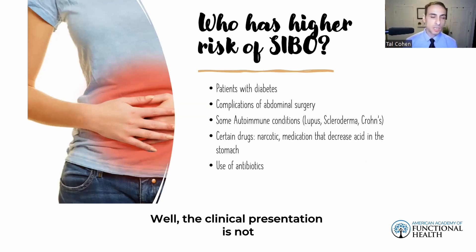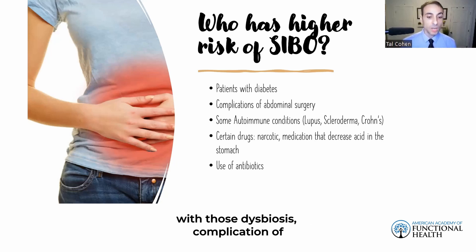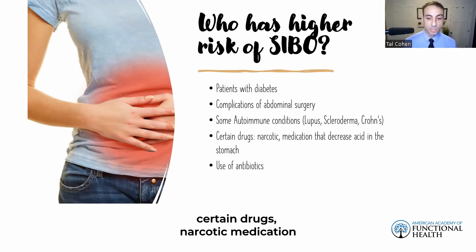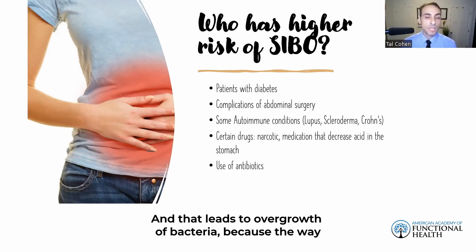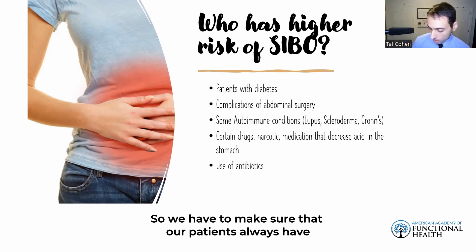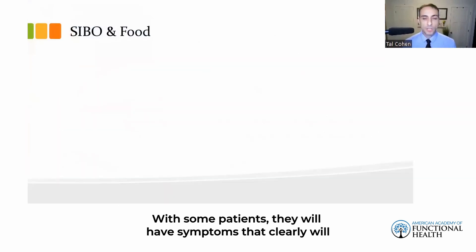The clinical presentation of SIBO is not always straightforward. Conditions associated with dysbiosis include diabetes, complications of abdominal surgery, autoimmune conditions like lupus and scleroderma, Crohn's, colitis, certain drugs, narcotic medications, and medications that decrease stomach acid or slow bowel movements. This can lead to bacterial overgrowth, because one way the body eliminates excess bacteria is through the feces and bowel movements, so we must ensure patients always have healthy bowel movements. Antibiotic use is also a factor.